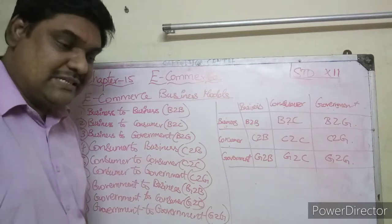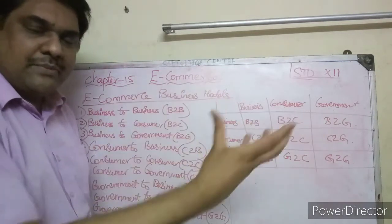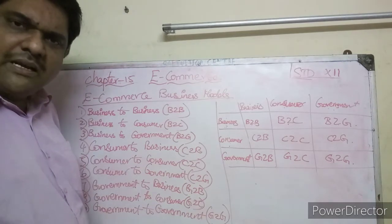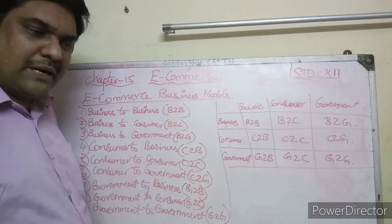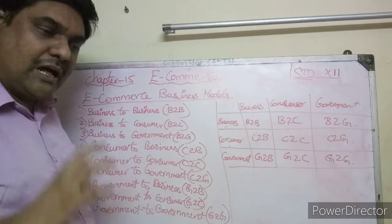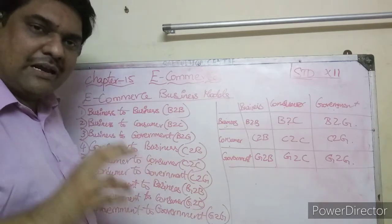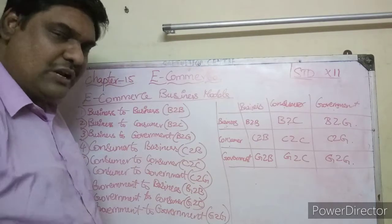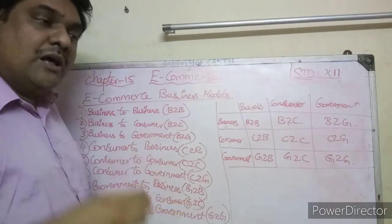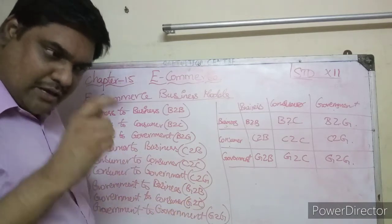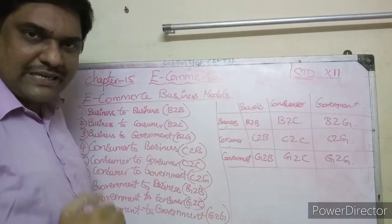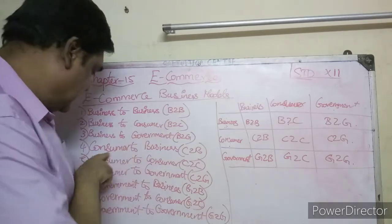Next is consumer to business. In consumer to business, consumers use websites of companies and earn a commission. For example, travel agents — there are travel websites like Yathra.com where you log in, enter your date, and find available flights, trains, or buses. You get a full list from the website. That commission-based model is consumer to business.